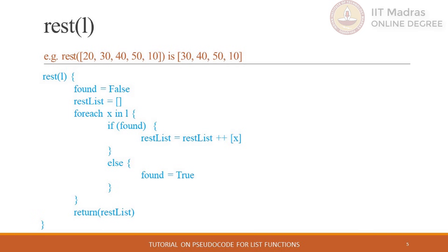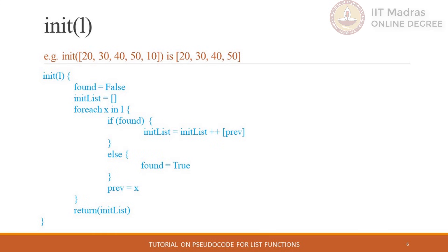We will also maintain a boolean variable called found and initialize it to false. This variable will be set to true only once when we access the first element in the list; from there onwards we will copy all the elements from the original list to the rest-list. If we pass an empty list to this function, the for-each block will not execute and the function will return an empty list. It will also return an empty list if we pass a list of length 1.